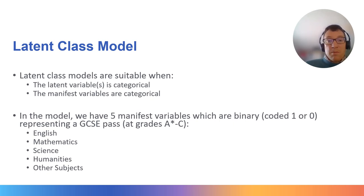In this model, there are five manifest or observed variables relating to outcomes in school subjects. These are based on five subject groupings: English, mathematics, science, humanities, and other subjects.